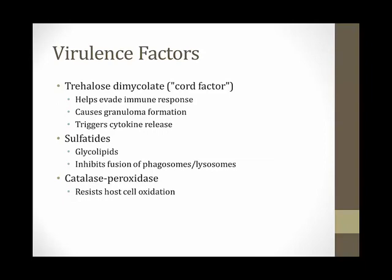There are key virulence factors for tuberculosis you should know, especially for Step 1. The first is called trehalose dimycolate, but everyone calls it cord factor. This molecule helps mycobacteria evade the immune response. In laboratory studies, cord factor has been shown to cause granuloma formation and trigger cytokine release in animal models. Virulent strains of Mycobacterium tuberculosis tend to have cord factor.